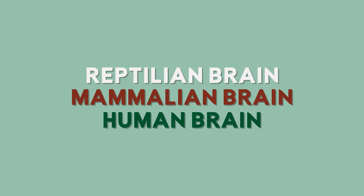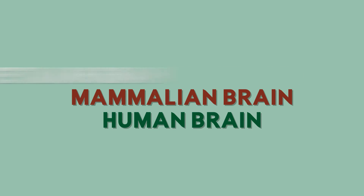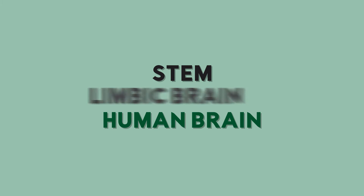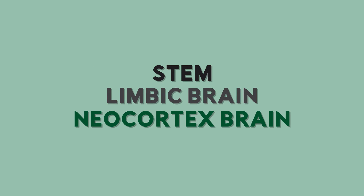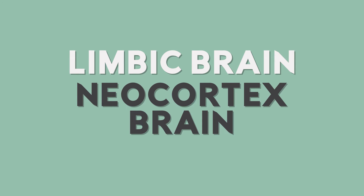These parts of the brain are also known as the stem, the limbic brain, and the neocortex brain. Let's focus on the limbic brain and the neocortex brain, because understanding those two can help us improve the behavior of our cartoon characters.